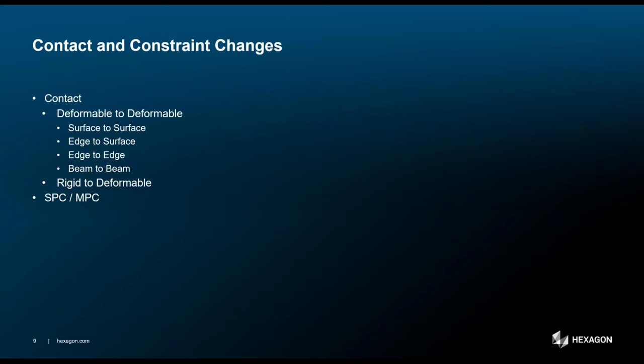Contact and constraint changes can cause non-linearity because the load path changes with displacement. Non-linear problems can be classified into three broad categories: geometric non-linearity, material non-linearity, and boundary condition non-linearity. Contact problems exhibit non-linear effects due to changes in boundary conditions — if there's a change in constraint due to contact during loading, the problem is classified as boundary non-linear. MSC Nastran supports contact between two surfaces, between surfaces and edges, between two edges, and between beams, on both flexible and rigid bodies.